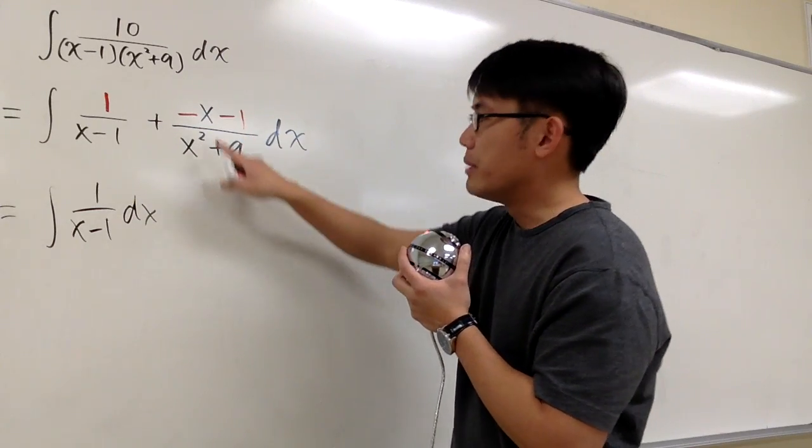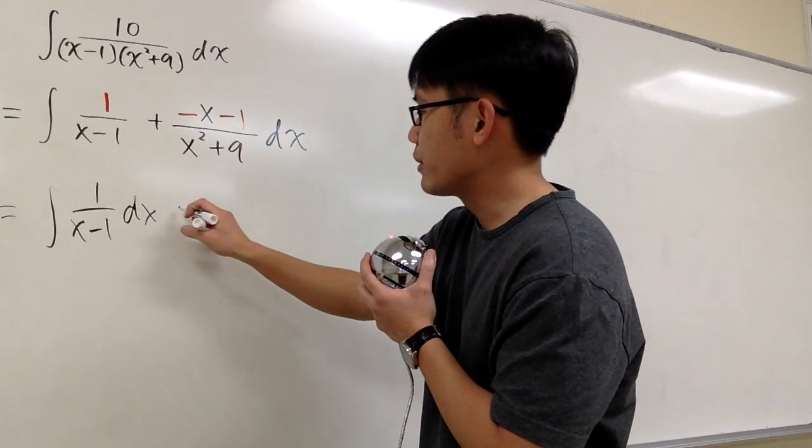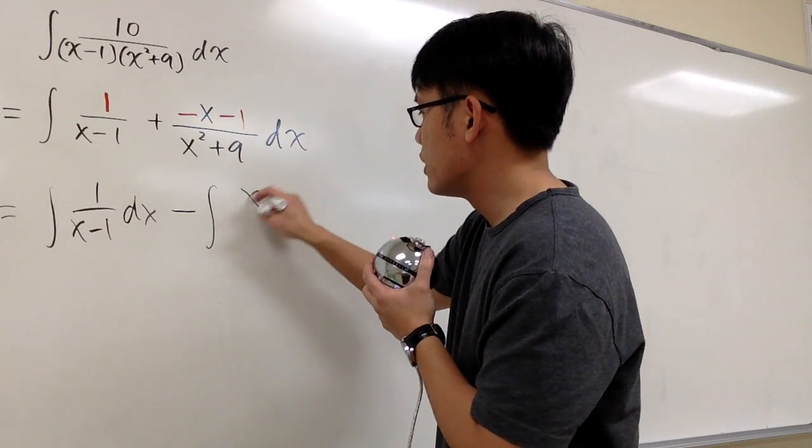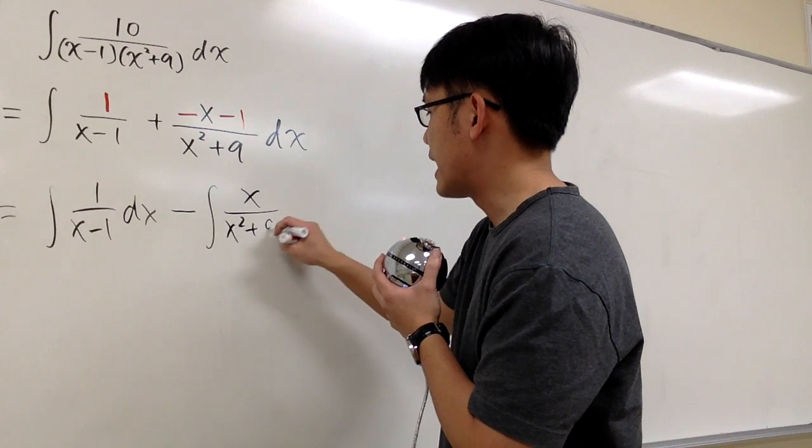I'm going to split the fraction, but I'm going to take out the negative. So we are talking about subtracting integral, and the function part is x over x squared plus 9.